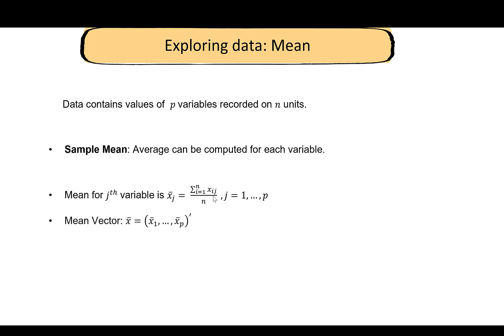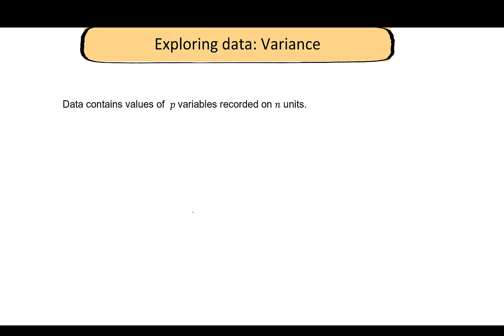We can collect all of these means into a vector called x̄. The dimension of x̄ is p × 1 — it is a p-dimensional column vector. This is the notation we will use throughout this course.